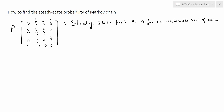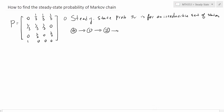For example, let's say we start from state 4. State 4 can only go to state 1. State 1 can go to state 2, 3, or 4 — so 1 can go to 3. And 2 can go to 1, 2, or 3 — so 2 can go to 3. And 3 can go back to 4. So if there is a cycle like this that goes through all states, then this is an irreducible set of states.